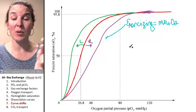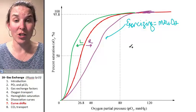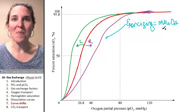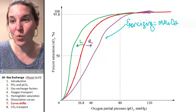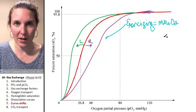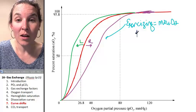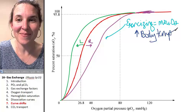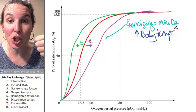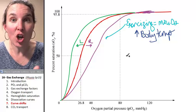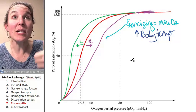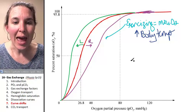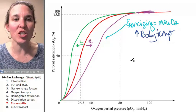I want to let my hemoglobin let go of the oxygen easier. So some things that happen to you when you are exercising. Number one, your body temperature goes up. And guess what? Increased temperature shifts the curve to the right. Increased temperature affects the shape of the hemoglobin molecule and makes it let go of oxygen faster.